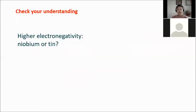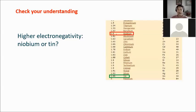Which has higher electronegativity — niobium or tin? Using the periodic table, niobium has an electronegativity value of 1.6 and tin has 1.96. Therefore, tin has higher electronegativity compared to niobium. Always refer to your periodic table for these values.